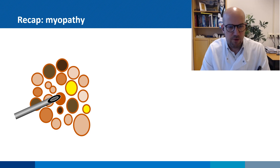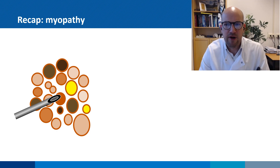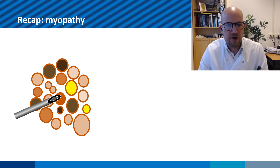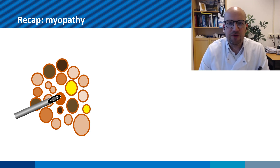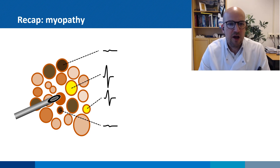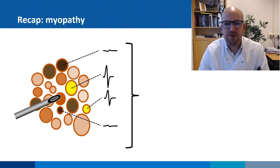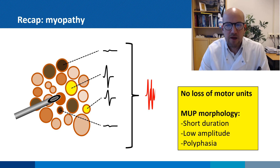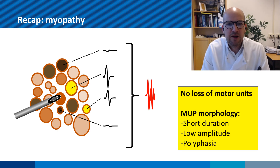Some muscle fibers will have trouble generating an action potential along their membrane. The end result is a smaller, short-duration, polyphasic motor unit potential. Important to note is that in some myopathies, for example inclusion body myositis, muscle fiber splitting and muscle fiber regeneration do occur, leading to the presence of muscle fibers that are not connected to an axon. These muscle fibers will also start producing spontaneous muscle fiber activity, which is not shown in this video but can be found in previous recordings.